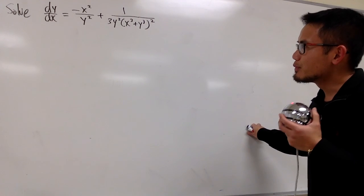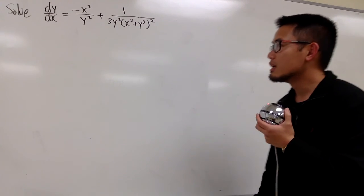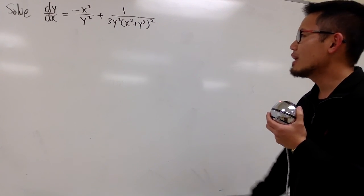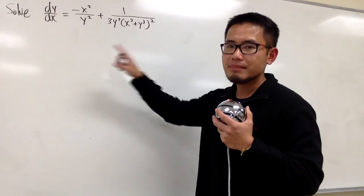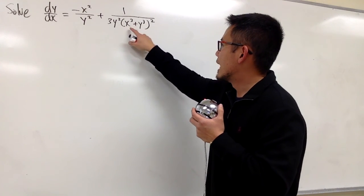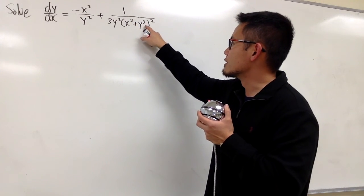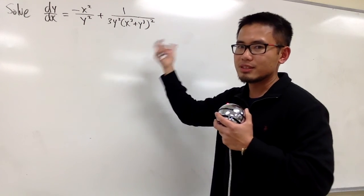So I am not really sure what to do because those are the usual techniques that we have. However, I look at this, I see that here I have x to the third power plus y to the third power inside of something squared.